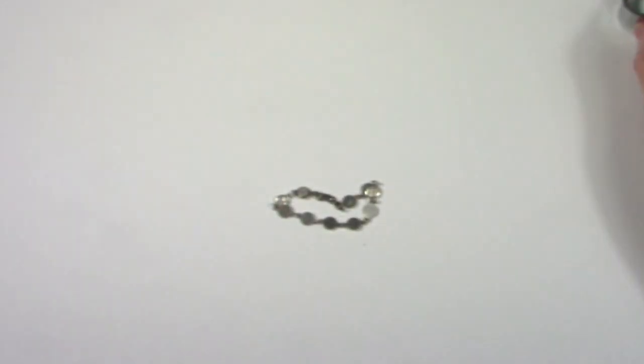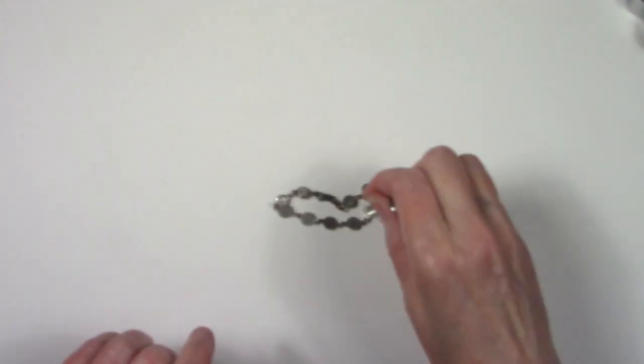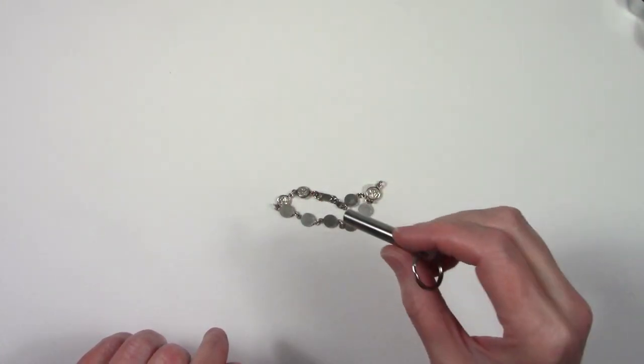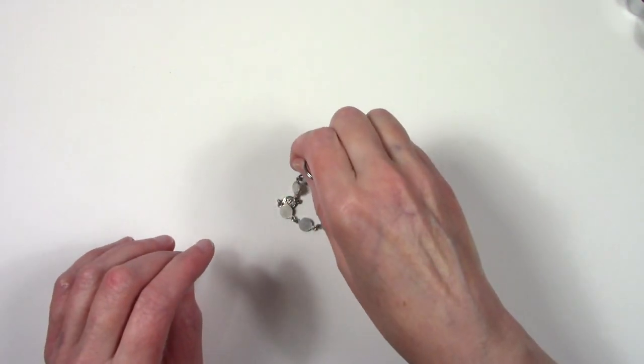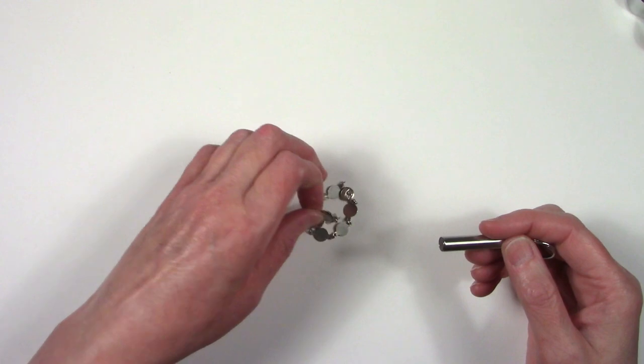So let's do a magnet test. So it's not magnetic. I will definitely test this with a silver. Sometimes the clasp is magnetic, which is normal.